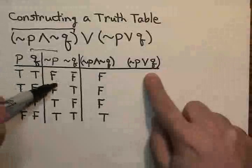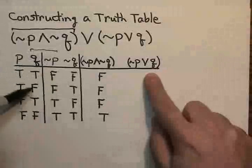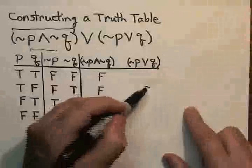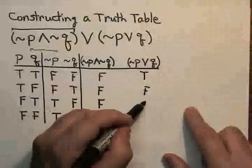And that will be row two. That's the only time that the disjunction will be false. Elsewhere, it will be true.